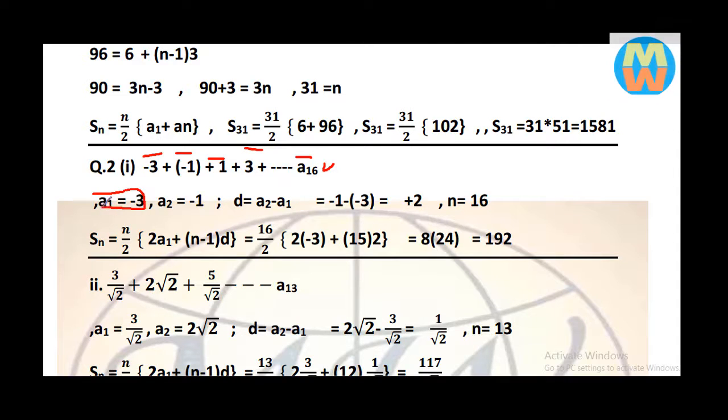a1 value is minus 3, a2 value is minus 1. From here we find the common difference: a2 minus a1. So common difference we get is plus 2 minus minus 3, which becomes plus 2. And n is equal to 16.